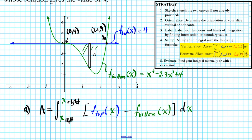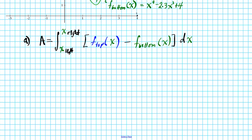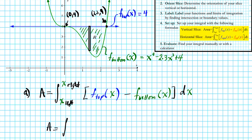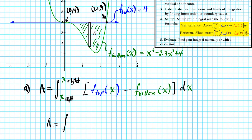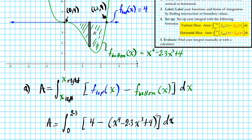We're slicing vertically, so we use the vertical slice formula. The region we're computing the area of goes from x equals 0 on the left to x equals 2.3 on the right. So A equals the integral from 0 to 2.3 of [4 minus (x to the fourth minus 2.3x to the third plus 4)] dx. That's the answer for part A.